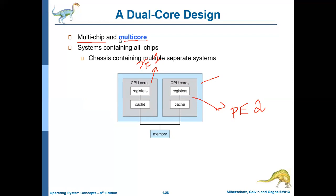So the point is: all multi-core systems are also multiprocessing systems, but not all multiprocessing systems are multi-core systems. Nowadays, most laptops come with multi-core processors.